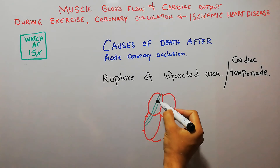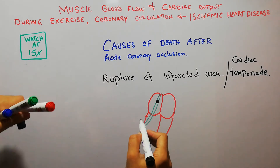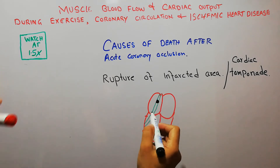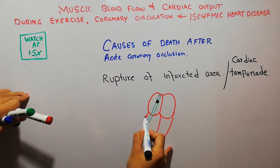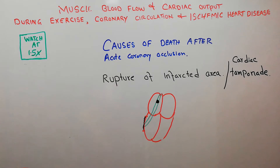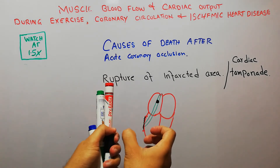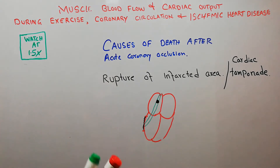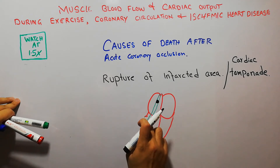How will the rupture occur? Blood supply to this area is decreased or stopped, so slowly and gradually, after a few days of coronary occlusion, the muscles in this area will start degenerating. When the heart muscles are contracting, this damaged area will start bulging out instead of contracting inward.